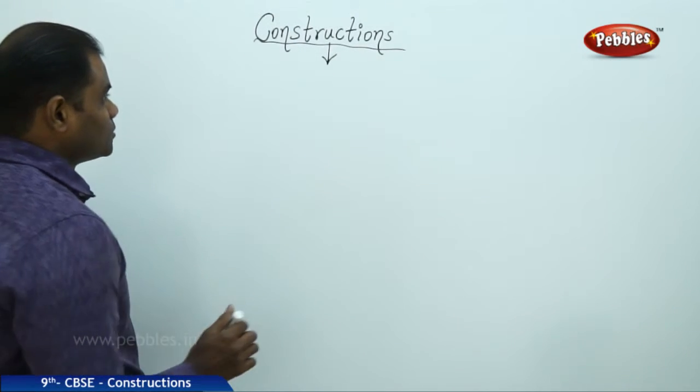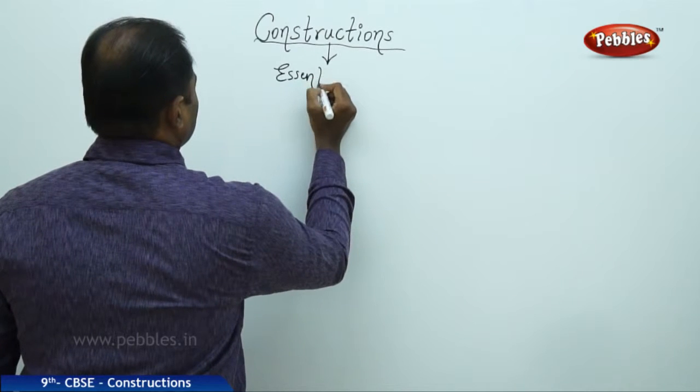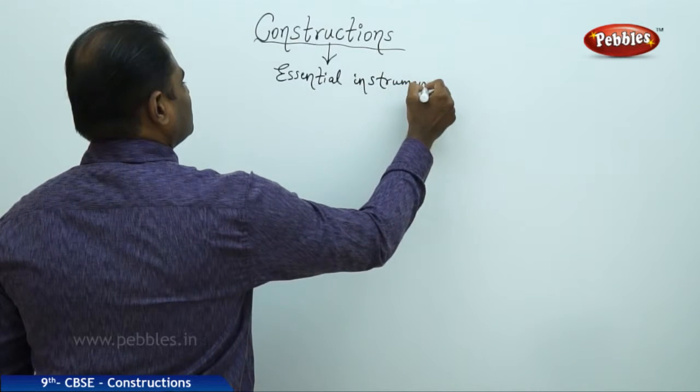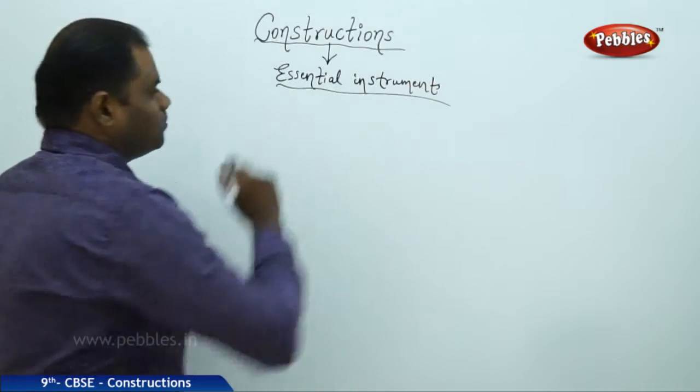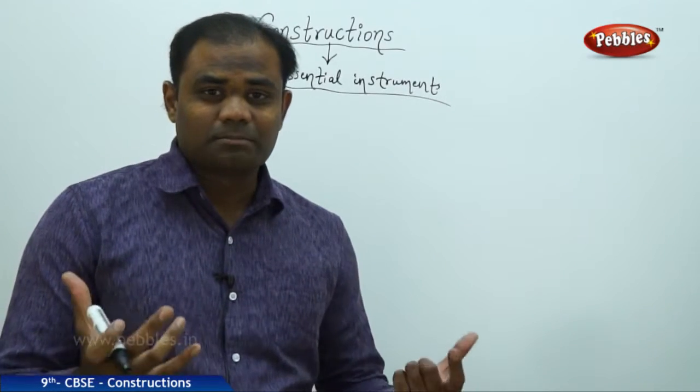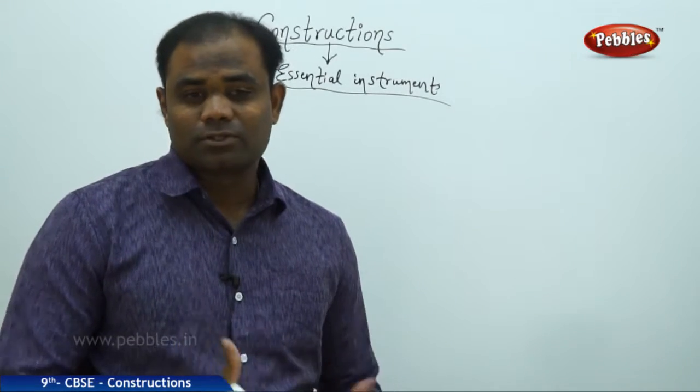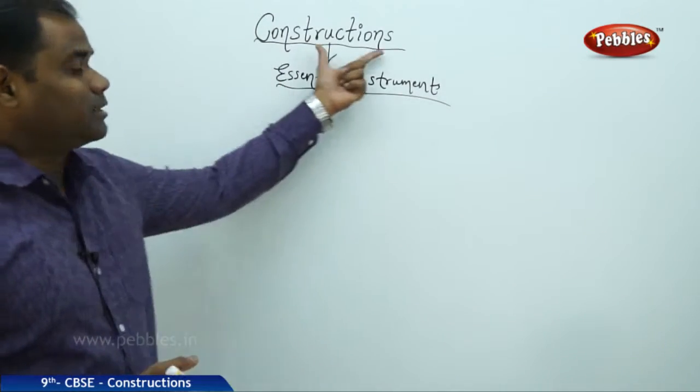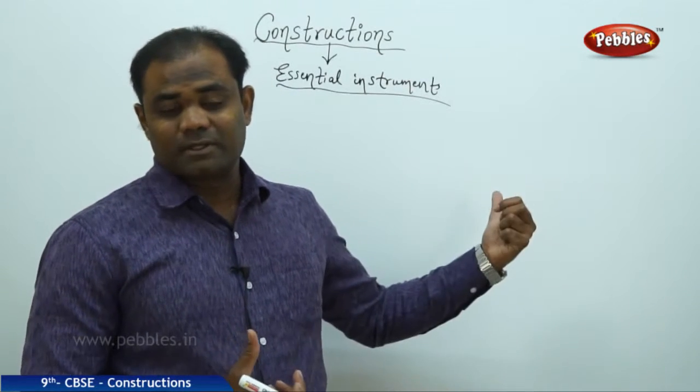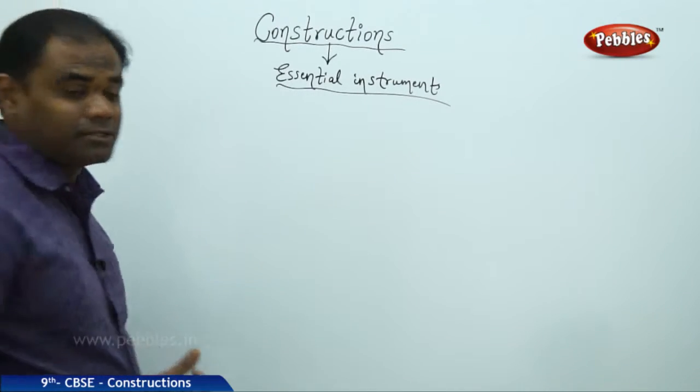So it is very important to note that essential instruments play a vital role in constructions because if you want something perfect, you need to have some tools used out there. So let's see what are the tools used in order to make perfect constructions, just like the bridge in the previous session as an example case.